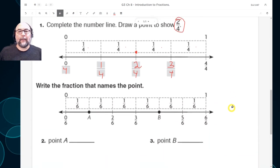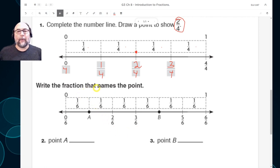Now you get the same thing here. They want you to tell us, write the fraction that names the point. Point A, so the point called A would be this one. And point B would be this one. Can you figure out which ones they are? See you guys later. Good luck.